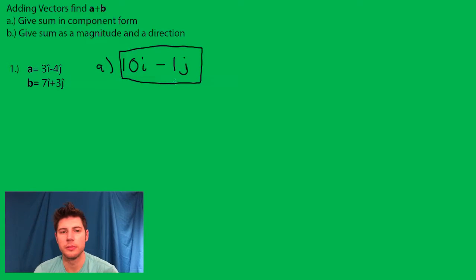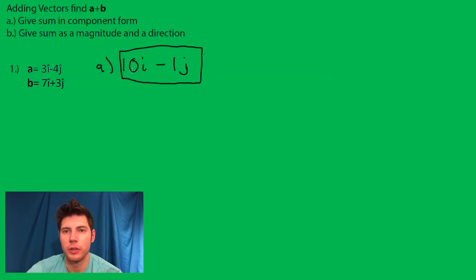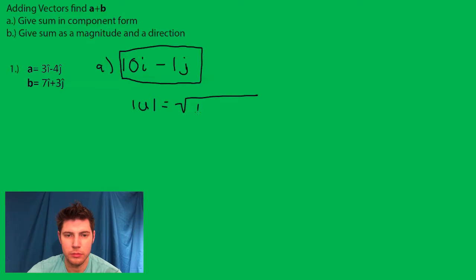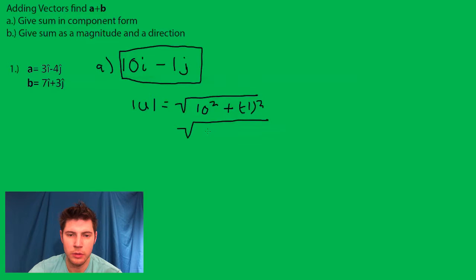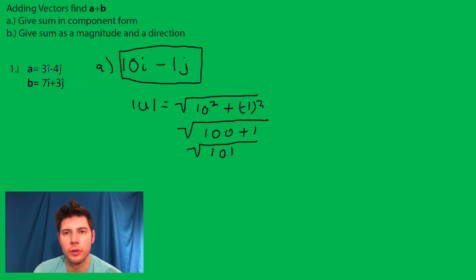Now if we want to show it as a magnitude and a direction, the way that you find the magnitude is you do the square root of this squared plus this squared. And that's the magnitude — square root of 101.